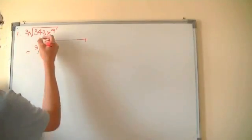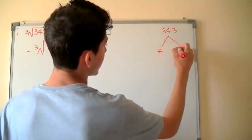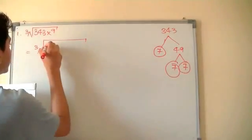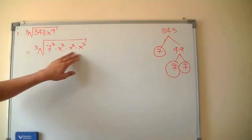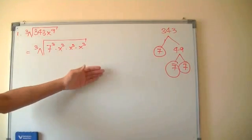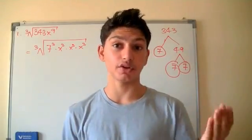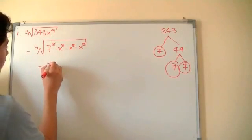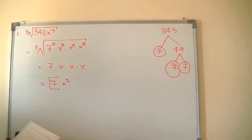Using the factor tree: 343 is 7 times 49, and 49 is 7 times 7 — so it's 7 cubed. For x to the ninth, it's x cubed times x cubed times x cubed. Since the exponents are added when multiplying, that's x to the 3 plus 3 plus 3, which equals x to the 9th. The cube root cancels out, leaving you 7 times x times x times x, which is 7 times x cubed. That's your final answer.